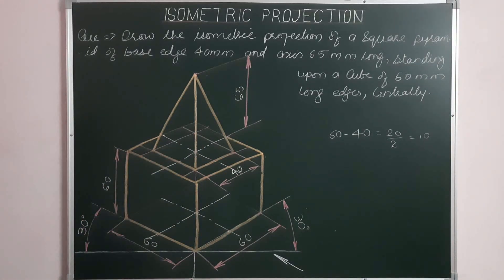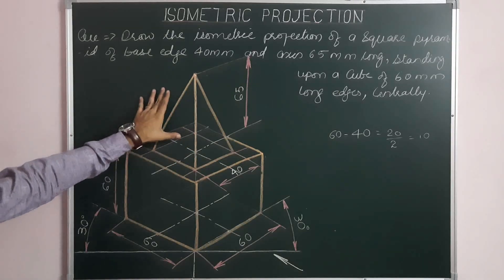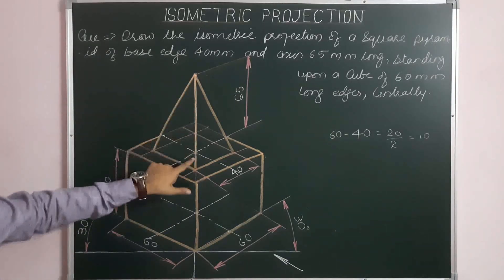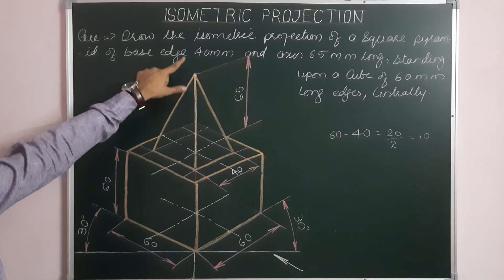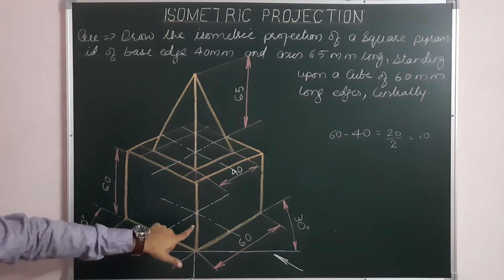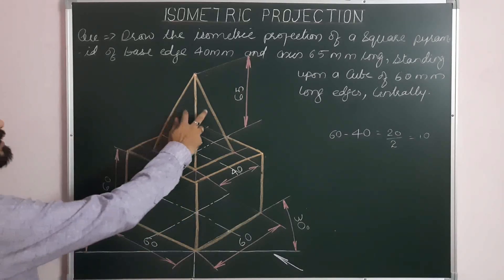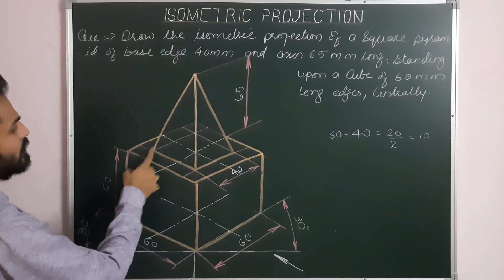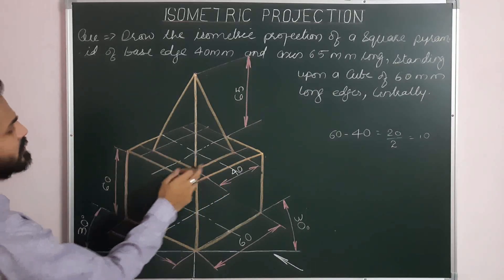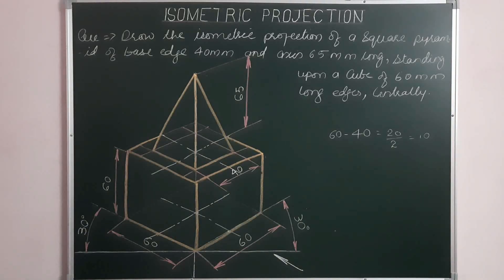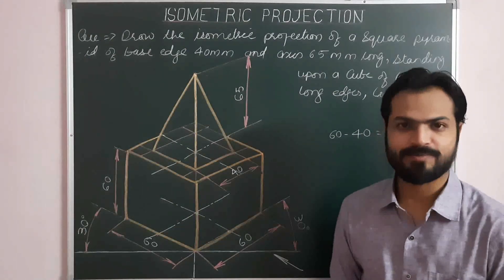This is the combination of solids — the first is a cube and the second is a square pyramid. The second solid, the square pyramid, is resting centrally, meaning the axis of the cube and the axis of the square pyramid both coincide on a common axis. The second solid is also resting with parallel sides — the sides of the square base are parallel to the extreme sides of the top base of the cube. This is the final answer. Please draw this problem in your sheet. Thank you.